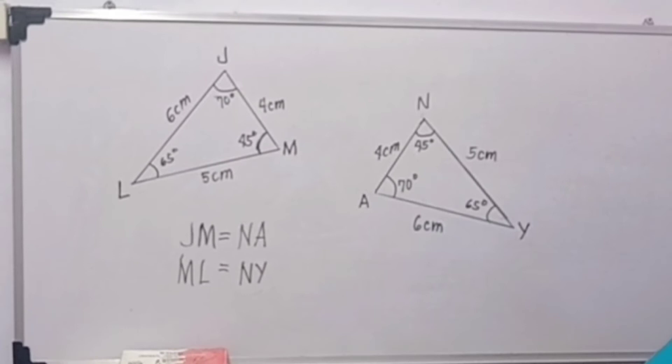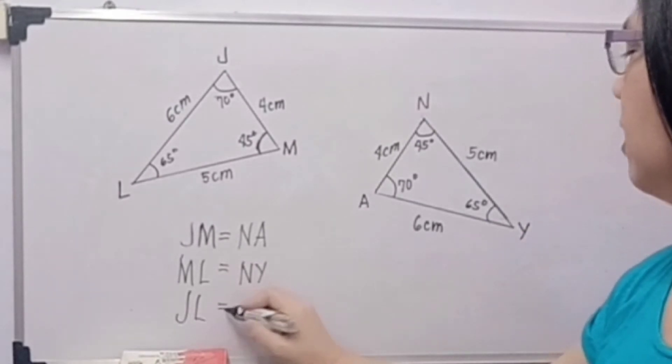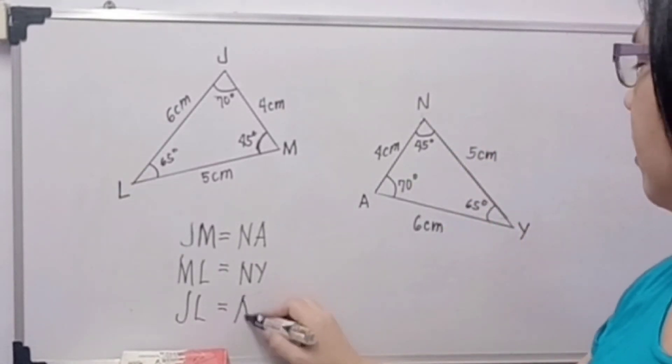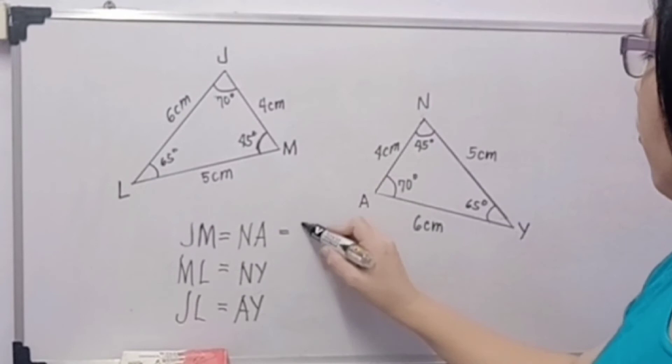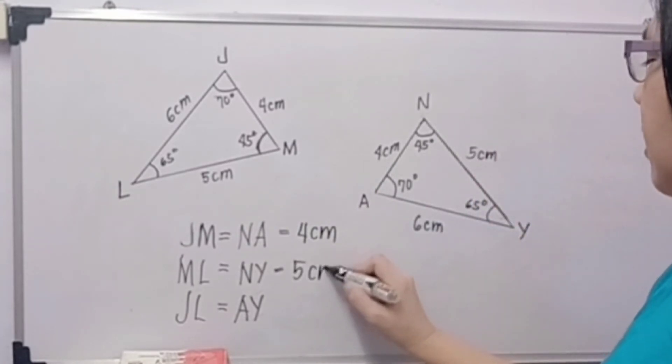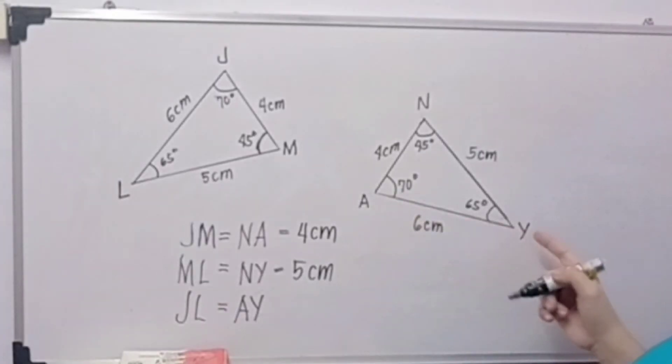And then we have JL is equal to AY. So JM is equal to NA, which is 4 cm. And then ML is equal to NY, which is 5 cm.